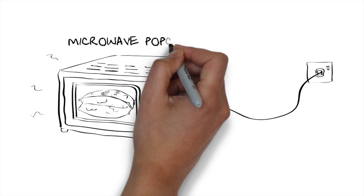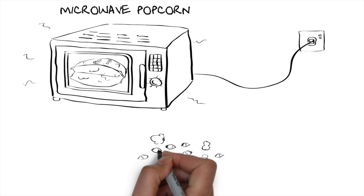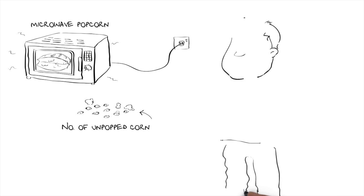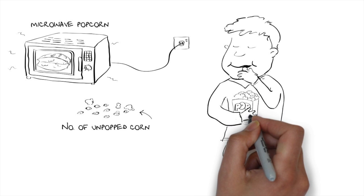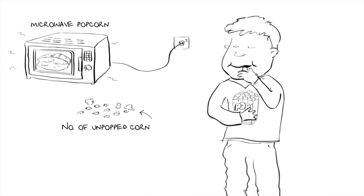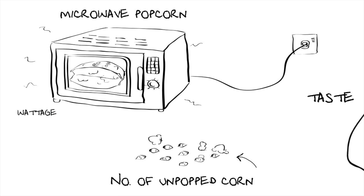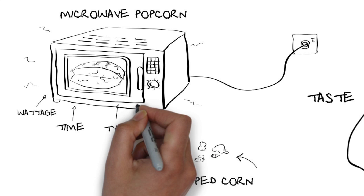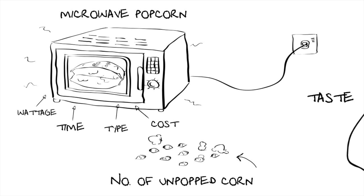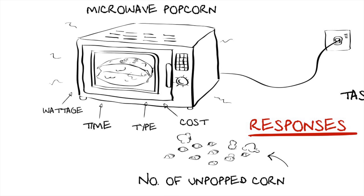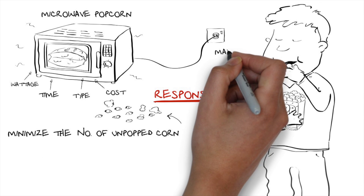Let's consider the process of making microwavable popcorn. There are two responses in this process: one is the number of unpopped corn kernels that remain at the end of the process, and the other is the actual taste of the popcorn. There are a number of factors or inputs: the wattage or power, the time, the type of popcorn used, and the cost of the popcorn. Our goal is to minimize the number of unpopped kernels while maximizing the taste.